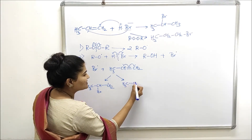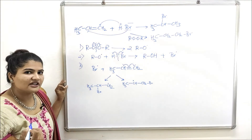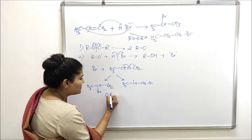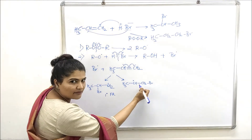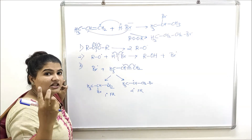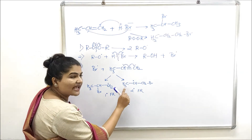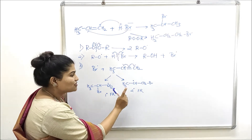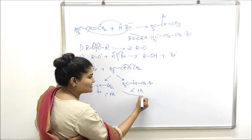In the first case (CH₃–CHBr–CH₂•), the radical is on a primary carbon, making it a primary free radical. In the second case (CH₃–CH•–CH₂Br), the radical is on a secondary carbon, making it a secondary free radical. The stability order for free radicals is: tertiary > secondary > primary. So the secondary free radical is more stable and its formation will be preferred, meaning it is formed in excess.